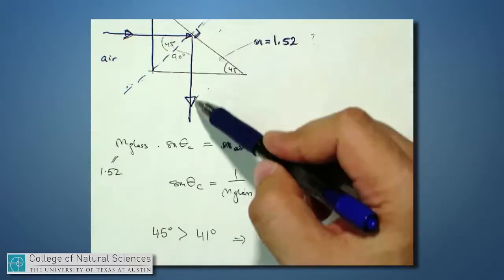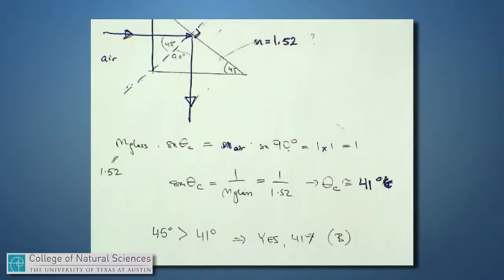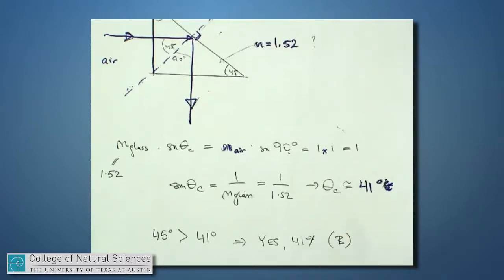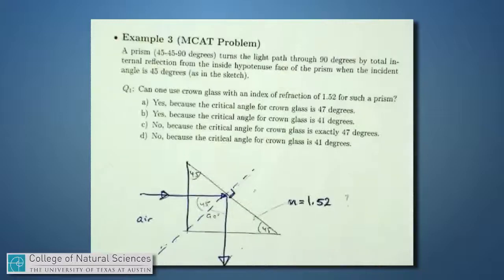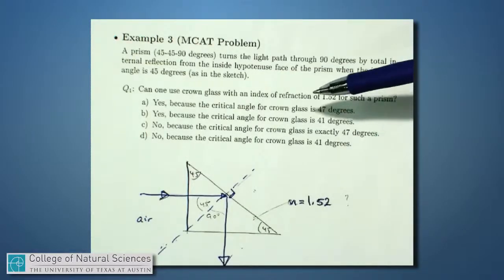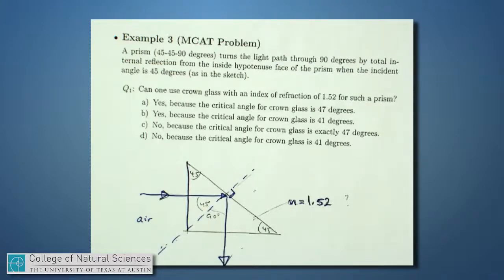And yes, the light will reflect down, because 45 is bigger than 41 degrees. So if I look back at the possible questions, or possible answers to the question, it looks like B is the correct answer, because it says yes, because the critical angle for crown glass is 41 degrees.